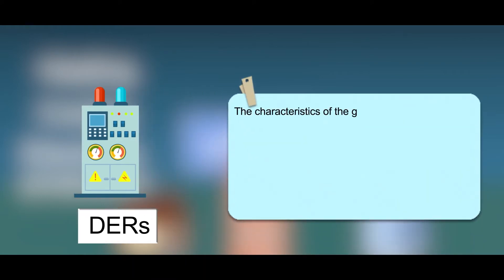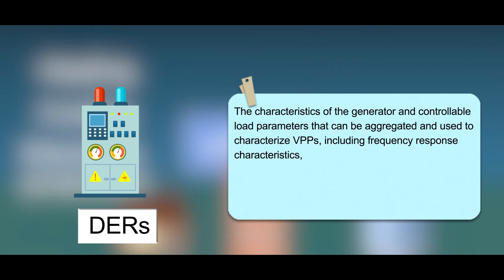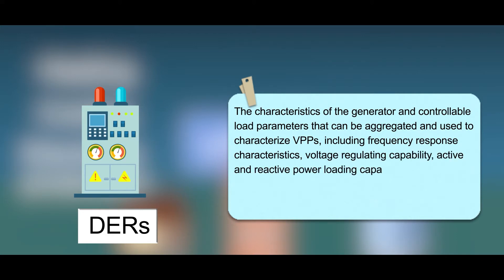The characteristics of the generator and controllable load parameters that can be aggregated and used to characterize virtual power plants include frequency response characteristics, voltage-regulating capability, active and reactive power loading capability, schedule and profile of load, among others.